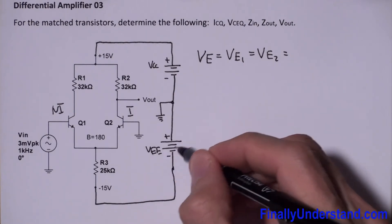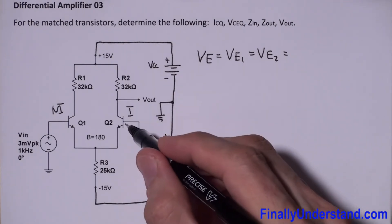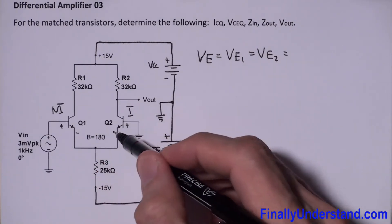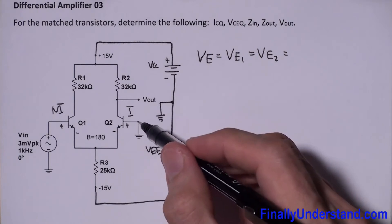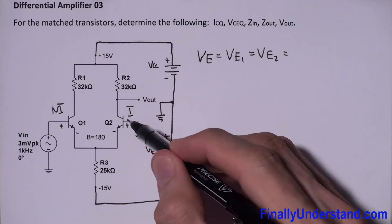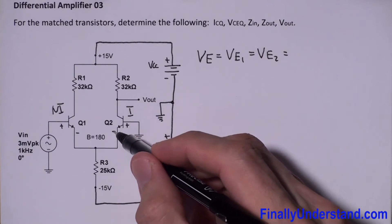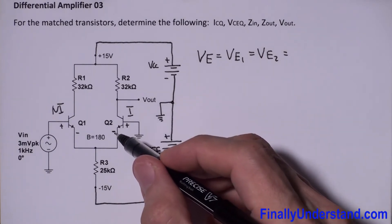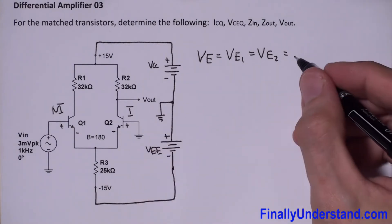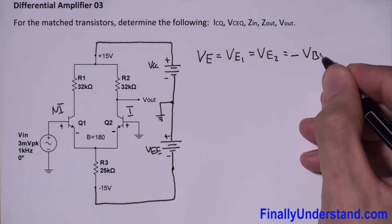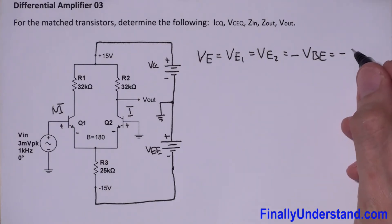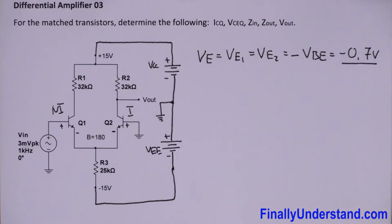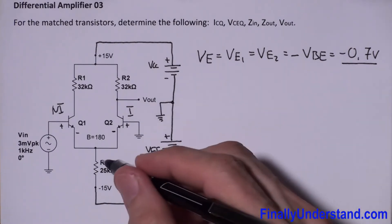We found last time that the current flows from VEE through the ground to each base. Keep in mind that this is grounded, and together with IC they create IE. If you want to find the voltage at the emitter, you simply realize it's nothing else but negative VBE.